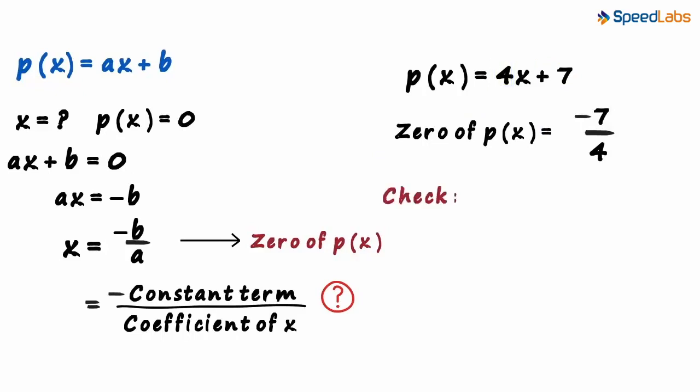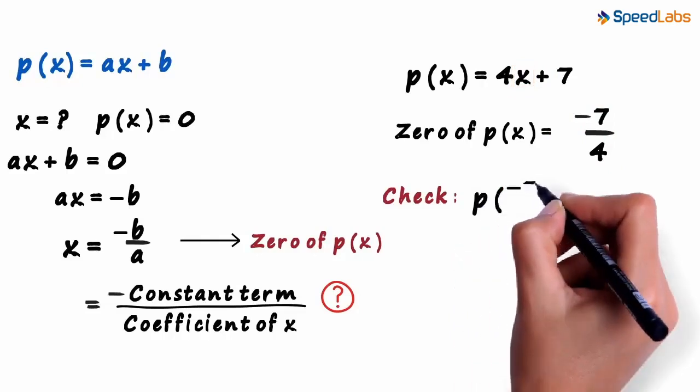Let us check our answer. We substitute minus 7 by 4 in place of X and see if we get zero. So we find P of minus 7 by 4.